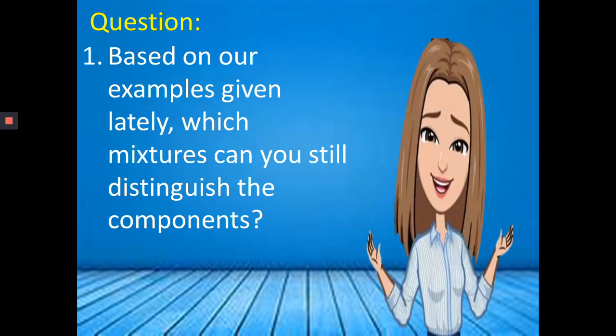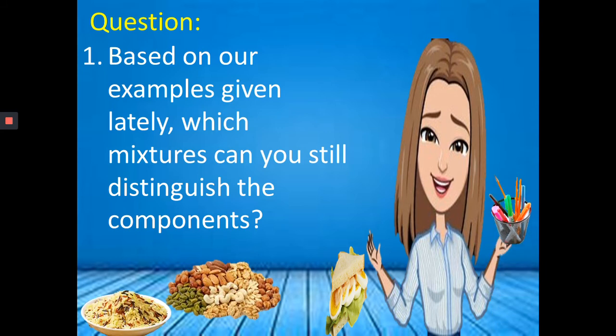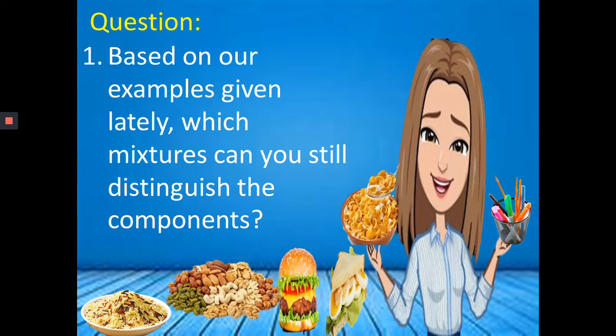Question number one. Based on our examples given lately, which mixtures can we still distinguish the component? We have the nuts, the different kinds of nuts, the sandwich, the pencils and pen, the different kinds of rice grains, the cereals and milk, and the hamburger. These are the mixture that we can distinguish or identify the substances or the components.